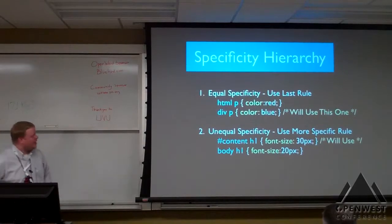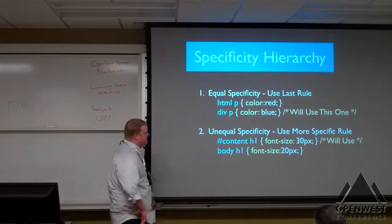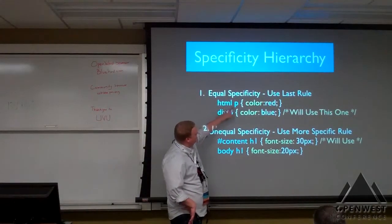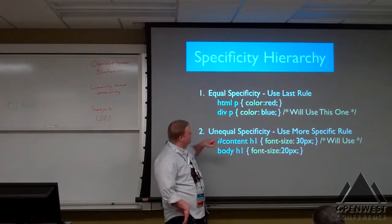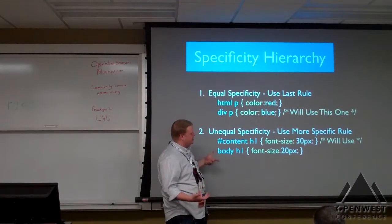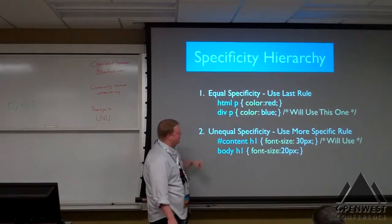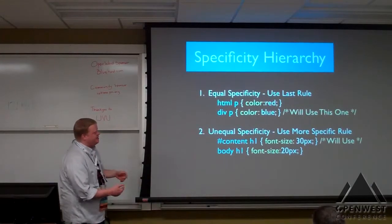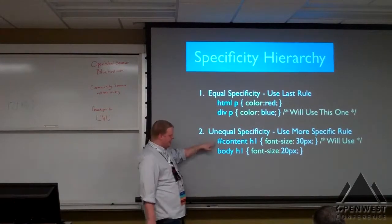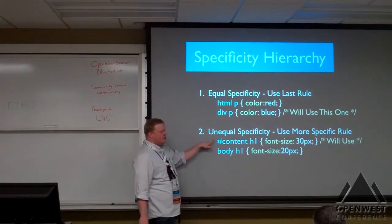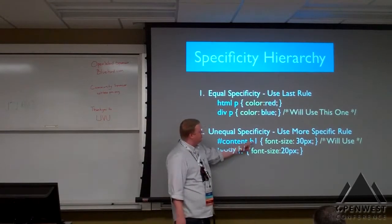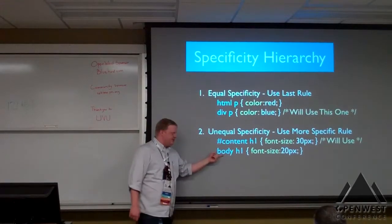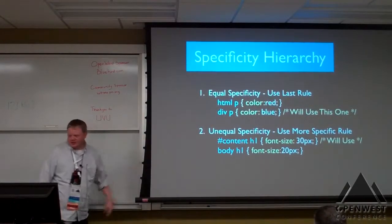If there's equal specificity — so these two rules both have two elements, a value of two — it will use the last rule declared, so color blue. If there's unequal specificity, it'll use the more specific rule. So this rule has a value of 101: 100 for an ID and 1 for an element, and this other rule has a specificity of two. We'll use the 101 rule.